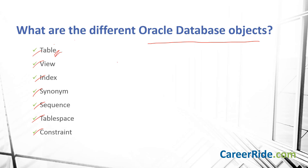Table: Oracle stores information in the form of a table. View: A view is a virtual table derived from one or more tables; it is a way of hiding the logic. Index: An index is a performance tuning method to speed up processing, especially searching. Synonym: A synonym is an alias name for a table. Sequence: A sequence is a unique number generator which can be assigned to the primary keys of tables. Table space: Table space is a logical storage unit in Oracle. Constraint: A constraint restricts the values in a database.